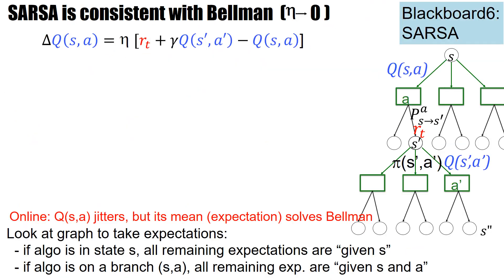Now let's sketch the proof. Here is again the update rule for SARSA. I start with two little modifications: I move η to the other side, so I have a one-over-η here. Then I use the hypothesis and say the expectation of this is zero. So I have: zero equals expectation of δQ(SA), which gives us the expectation of the update term.